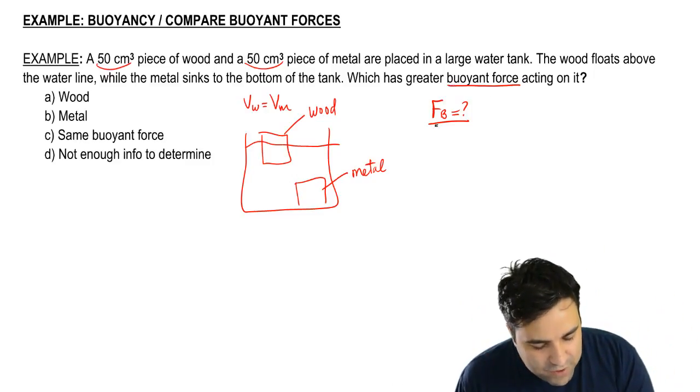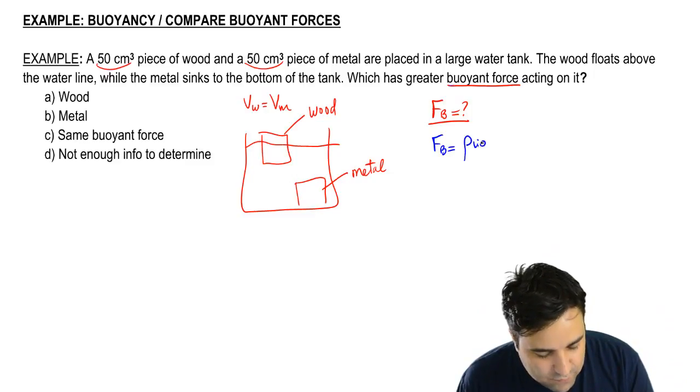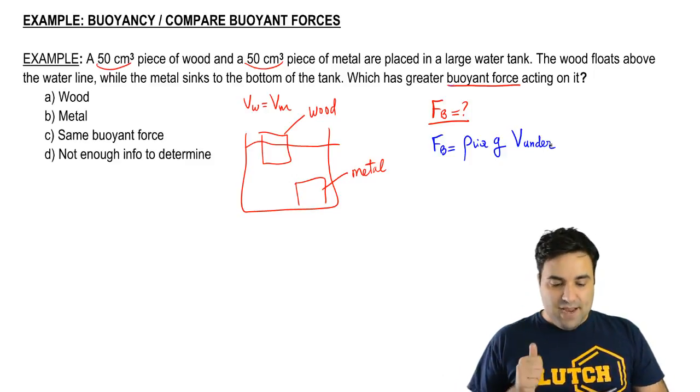What is the equation for buoyant force? The equation for buoyant force is density of the liquid, gravity, and the volume of the object that is under the liquid.